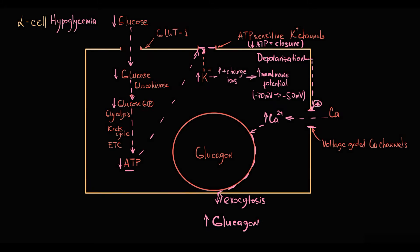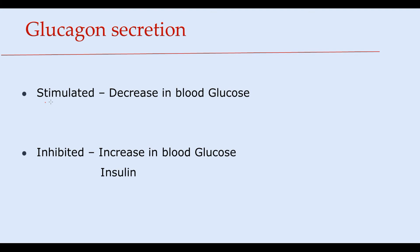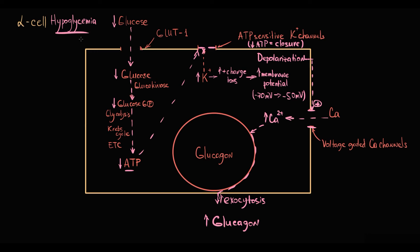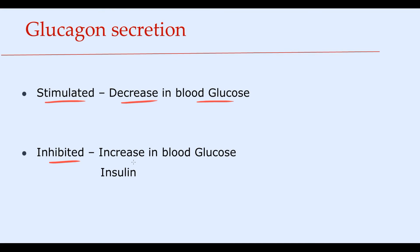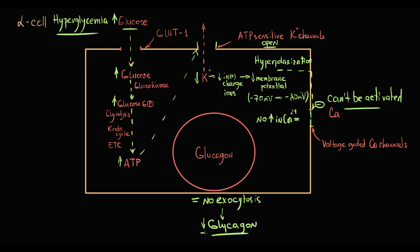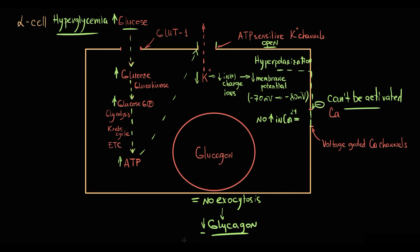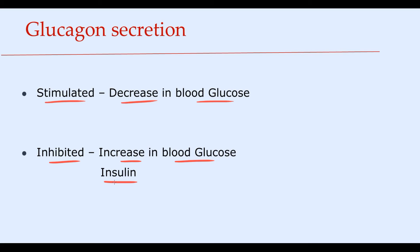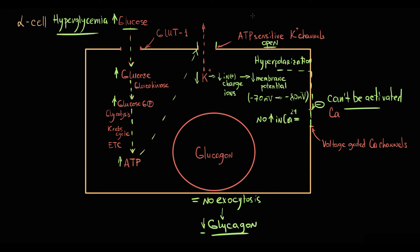In terms of glucagon regulation, the major stimulus for glucagon secretion is decreasing blood glucose level. The factor that decreases glucagon secretion is hyperglycemia. The second factor that decreases glucagon secretion is insulin. Insulin affects the sensitivity of potassium channels. To explain this, let's take an initially hyperglycemic state.